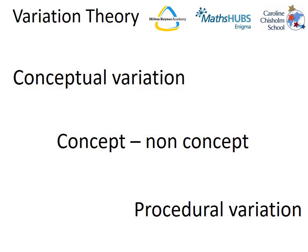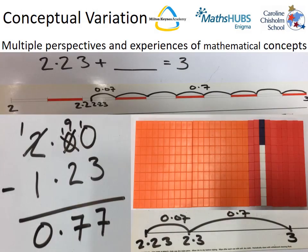There are many different types of variation theory, but our research is mainly focusing on these three key ideas: conceptual variation, concept and non-concept, and procedural variation. The following slides will demonstrate these three theories, with examples from our schools and the schools we visited in Shanghai.